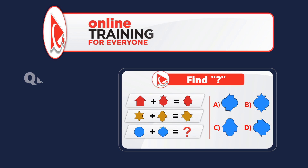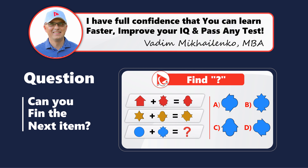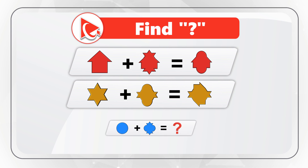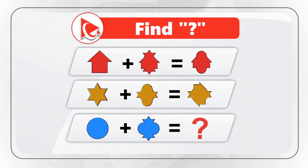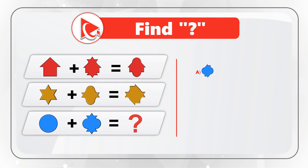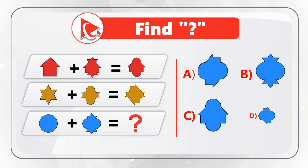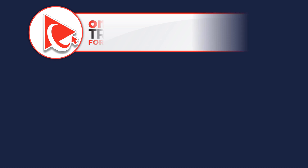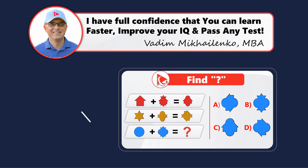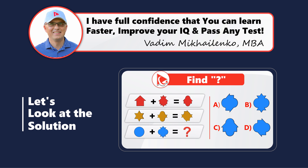Here's a tricky problem which some might find challenging. You're presented with three expressions, each of a different color. One of the items in the third expression — represented by blue color — is missing. You need to select the missing item, currently shown as a question mark, out of four possible choices — A, B, C, and D. Take a close look to see if you can come up with the answer. Consider pausing this video if you need more time. I'm moving forward to share with you my version of the answer.